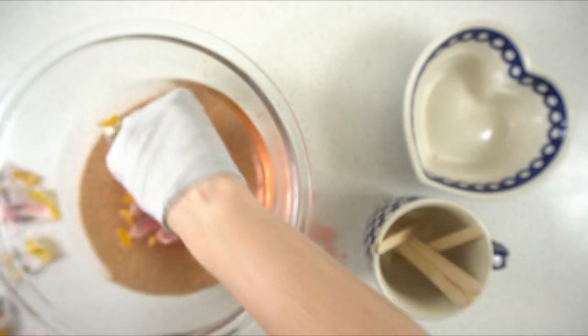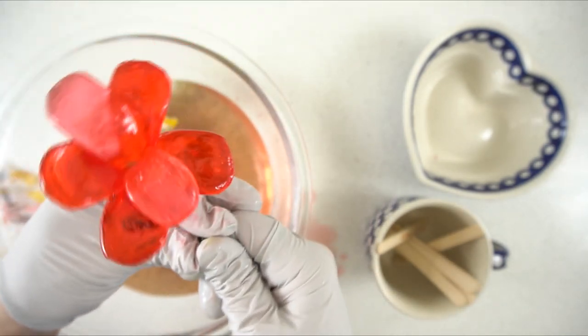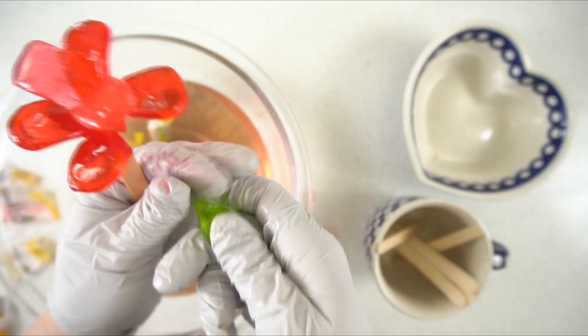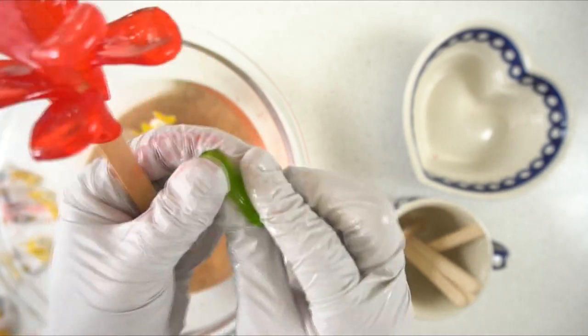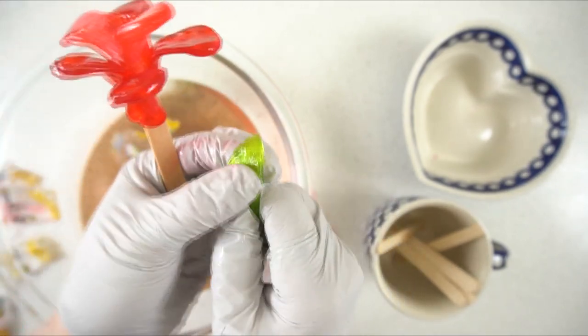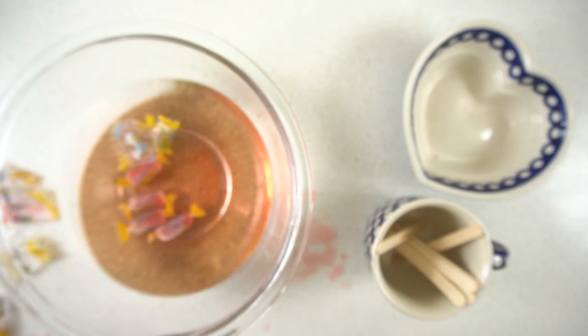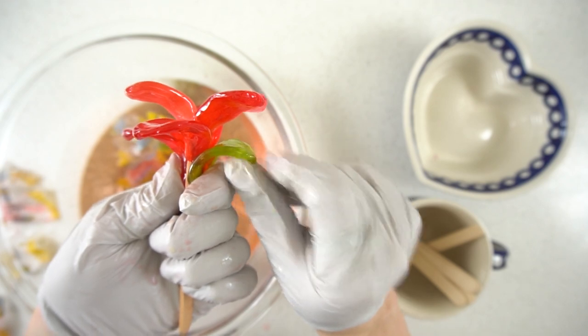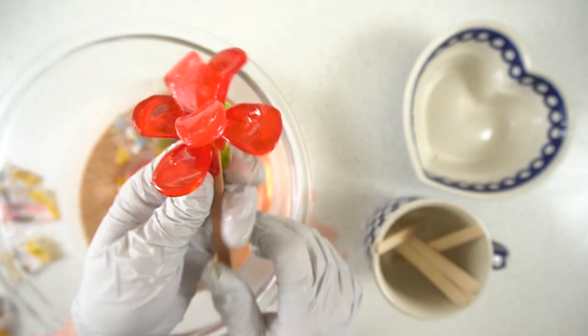Now let's grab some green for a leaf. Unwrap it, and then for the leaf I don't want it to be the same shape as my petals. I'm just going to kind of pinch it, make it more into that leaf shape, and then press it to my popsicle stick as well as to the other pieces of my flower. I don't want it just to be stuck to the popsicle stick, and kind of bend it out.